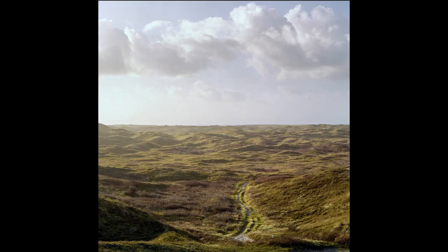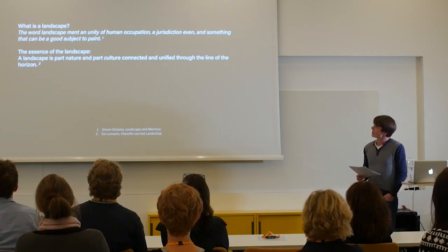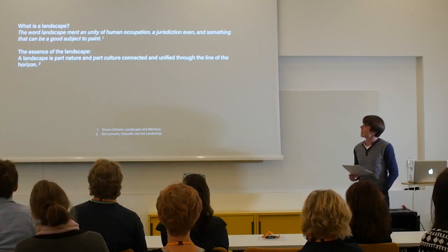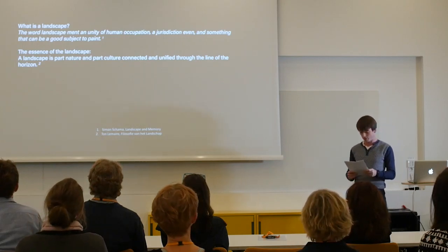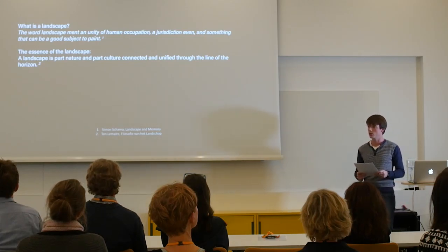So what is a landscape? A landscape means a unity of human occupation, a jurisdiction even, and something that can be a good subject to paint. It's from the Dutch etymology of 'Landschap,' which is at the root of 'landscape.' The essence of a landscape can be seen as partly nature, partly culture, and it's always connected and unified through the line of the horizon.